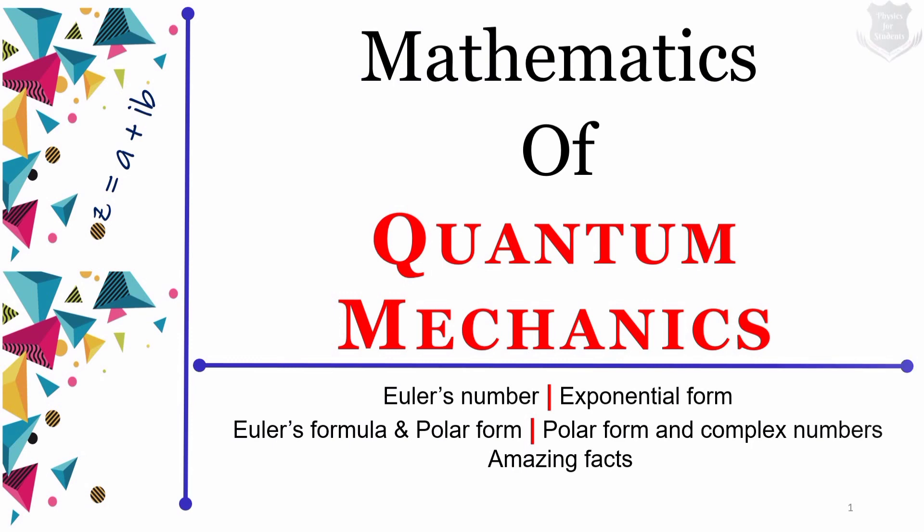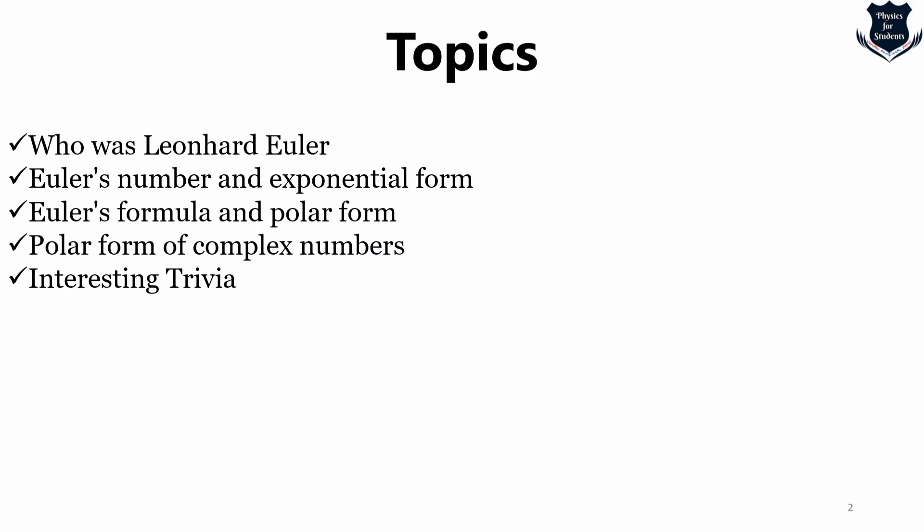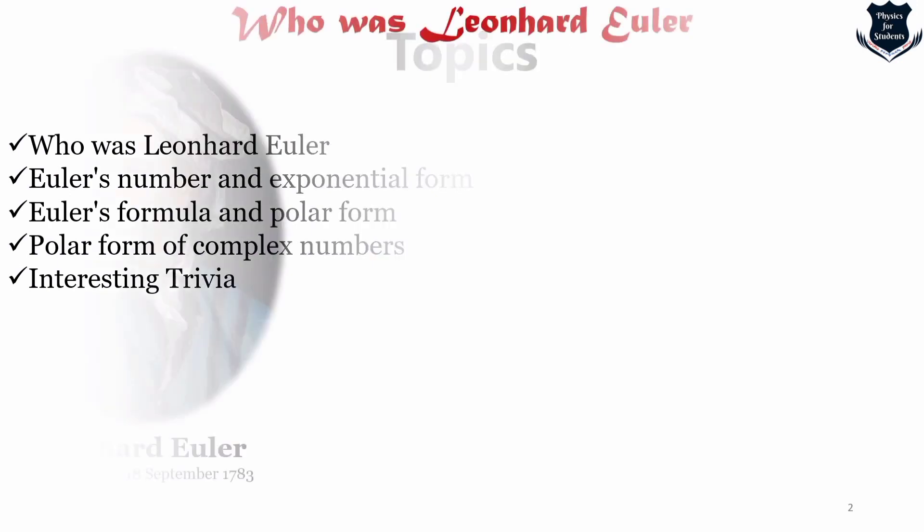So first let us see what are the topics that we are covering. First we would like to know who was Leonard Euler, then Euler's number and its exponential form, Euler's formula and polar form, polar form of complex numbers, and a very interesting fact. I hope you are liking this series and we would continue one by one and see how it becomes useful to learning quantum physics.